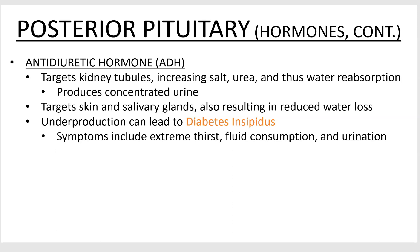There is a disorder called diabetes insipidus — not to be confused with diabetes mellitus, which deals with blood sugar. Diabetes insipidus occurs when you under-produce ADH, causing you to lose far more water than normal. You'll constantly urinate and be thirsty, needing to wake up many times during the night to drink and urinate. That's been this first video — stay tuned for the next one.